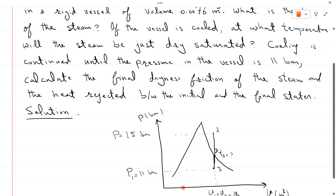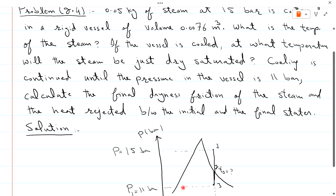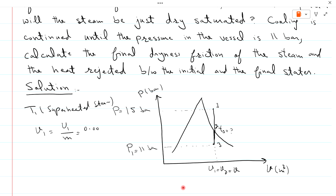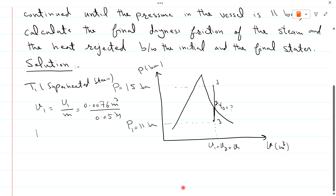First, find the temperature of the saturated steam. For superheated steam at point 1, find the specific volume. Because we are given total volume, specific volume equals total volume divided by mass. Total volume is 0.0076 cubic meters and mass is 0.05 kg. So specific volume is equal to 0.152 cubic meters per kg.